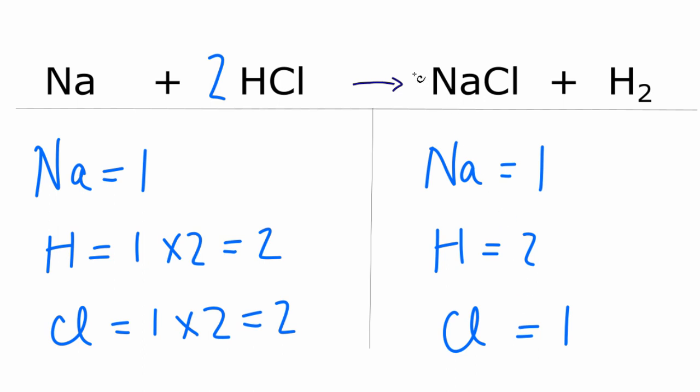Well, let's do the same thing over on the product side, we'll put a coefficient of two in front of the NaCl. So one times two, we have two chlorines, those are balanced.